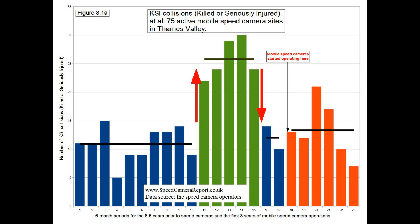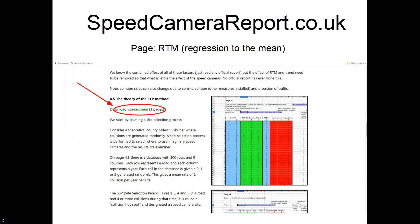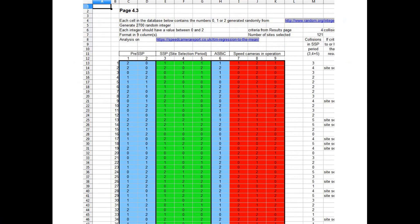So what was it? The answer is the site selection process. It's how they selected these sites that caused that bump. So we need to find out what the features of site selection are, and we can do that in this spreadsheet. On the third page, I've created a database of randomly generated numbers, and we're going to use this to select camera sites.